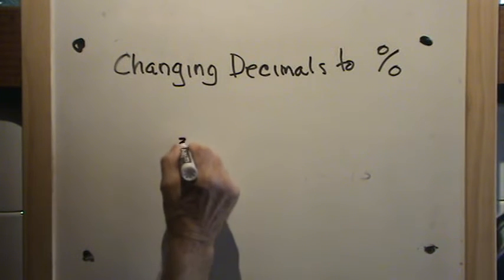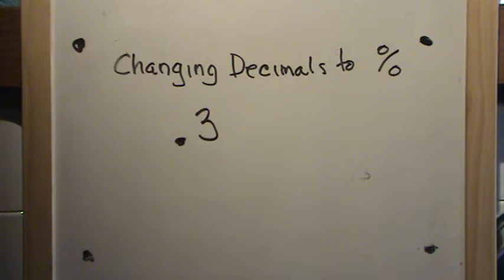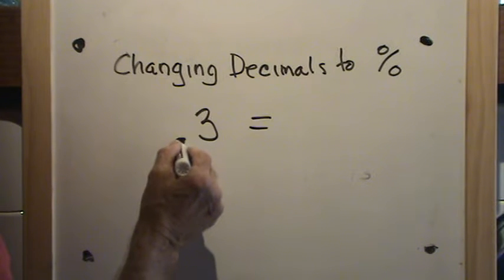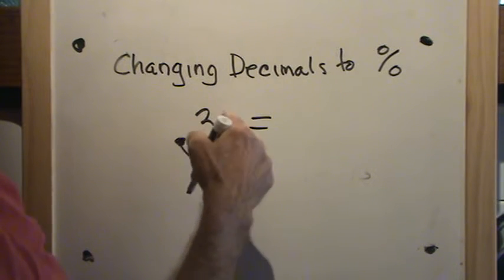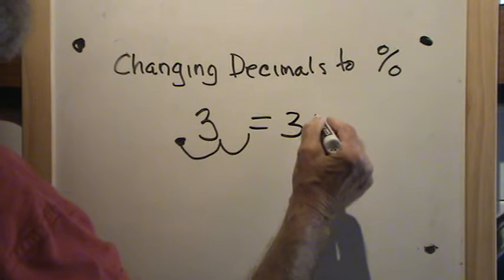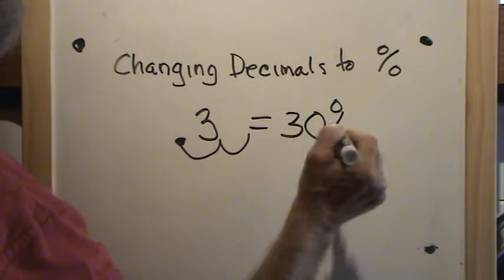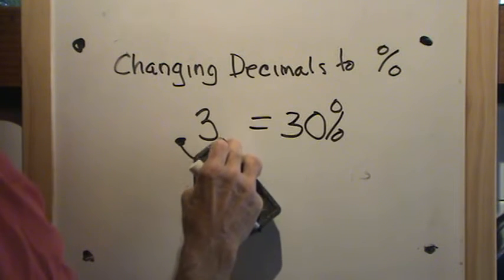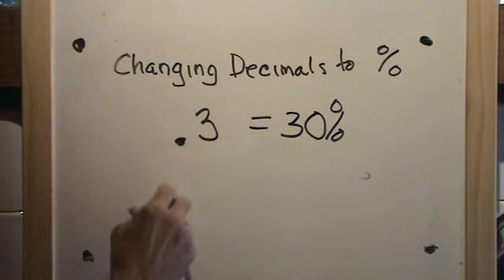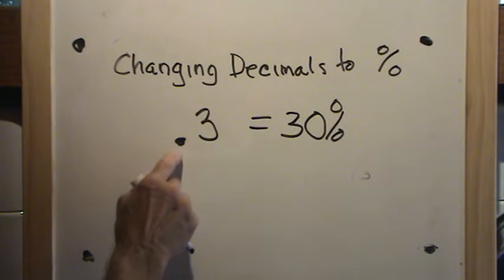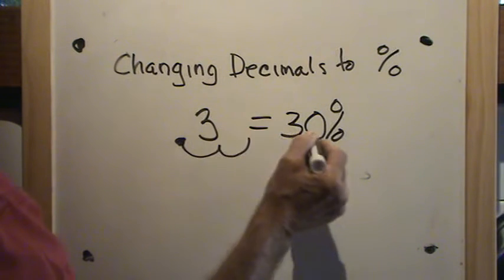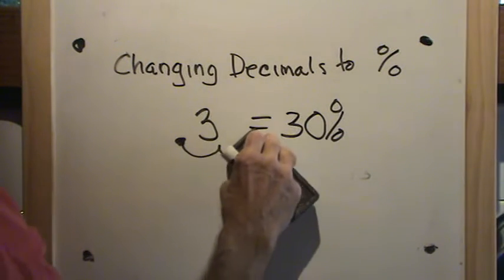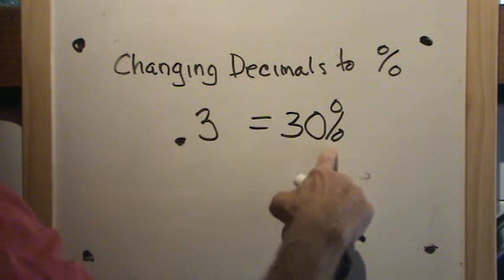Suppose I had three-tenths and I wanted to change that to a percent. The rule remains exactly the same — we move the decimal place two places to the right — but there's nothing there, so I have to put a zero in as a placeholder. Then I add the percent sign. To change three-tenths to a percent, I move the decimal place two places so that it goes like this, but I have to put a zero in as a placeholder. So three-tenths is equal to thirty percent.